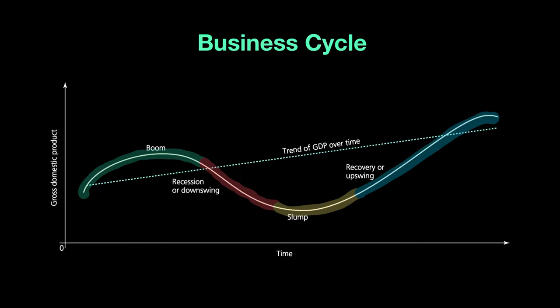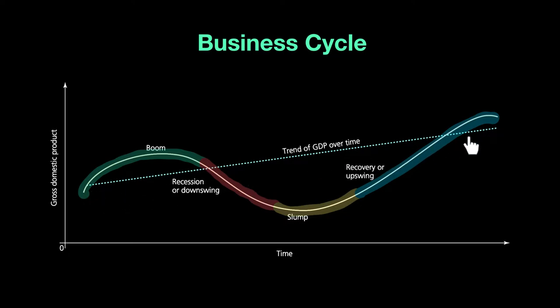Hello everyone and welcome back. We've just finished understanding the different phases that collectively form what we know as the business cycle — boom, recession, slump, and recovery. All four of these will always be experienced by all economies in this sequence. And of course during all of this, the government has a very important role to play in making sure that the trajectory of gross domestic product is on the up.